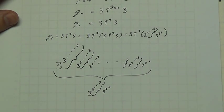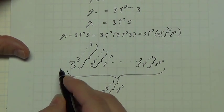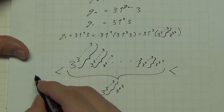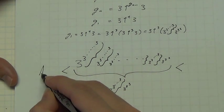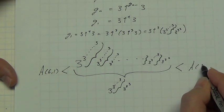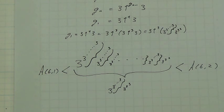I'm conjecturing that this number G1 is between the Ackermann function A(6,1) and A(6,2). If anybody wants to take a stab at proving that, be my guest — send me an email.